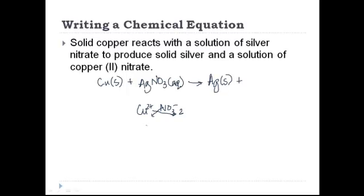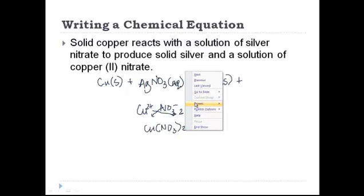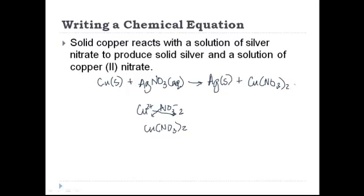We're going to cross the charges and we get Cu(NO3)2. So we'll just move over here and write that down. And it's a solution, so we got Aq. So Cu(s) plus AgNO3(aq) arrow Ag(s) plus Cu(NO3)2(aq).